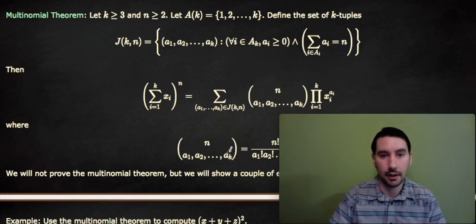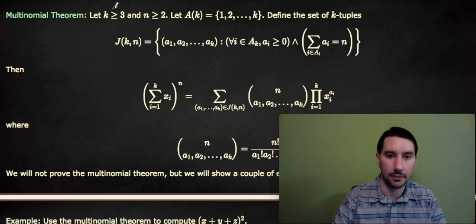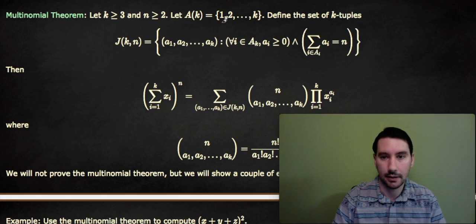So in this lesson, what we're doing is adding up three or more variables and raising them to some power n, which is bigger than or equal to 2. And the way we do that is if k is bigger than or equal to 3 and n is bigger than or equal to 2, we're going to let a_k be an index set, which is just the numbers 1 through k.